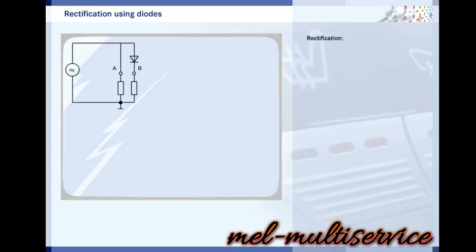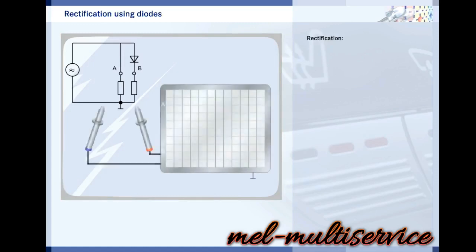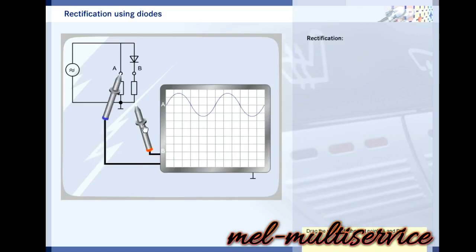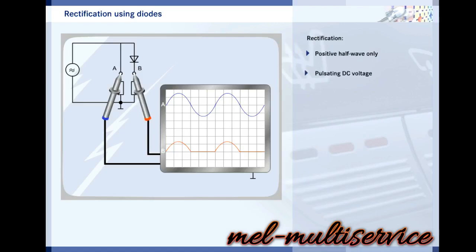Because diodes only conduct current in one direction, they can be used to rectify alternating current. The oscilloscope shows that the diode only allows the positive half wave to pass. The AC voltage is converted to a pulsating DC voltage. There is also a difference in the positive part of the voltage curve: the half wave is reduced by the forward voltage.